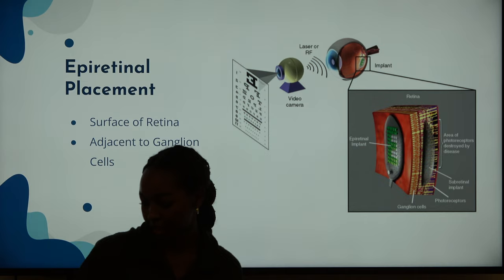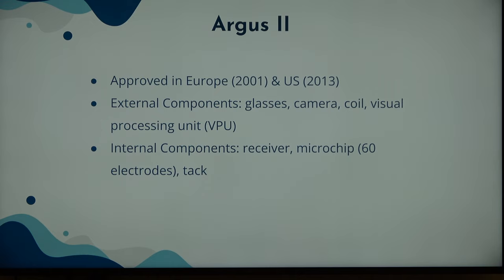An example of an epiretinal prosthesis or implant is Argus II. This was approved in Europe in 2001 and then later in the United States in 2013. It has external components such as glasses with a camera mounted in the middle, a coil, and a visual processing unit or VPU. There are also internal components: a receiver, a microchip with 60 electrodes, and an attachment that secures it to the retina.